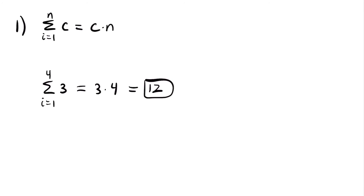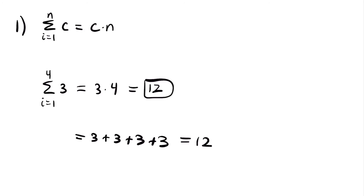Just to verify: the sum from 1 to 4 of 3 means we're just adding 3 to itself four times. For i equals 1, 2, 3, and 4, our term is always 3, since there's no i in the expression. So it's 3 plus 3 plus 3 plus 3, which equals 12. It's much faster to use this formula and just multiply 3 by the upper bound of 4.